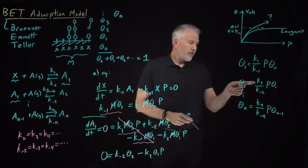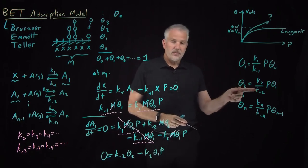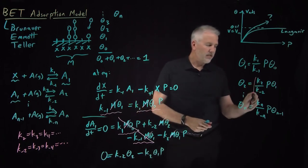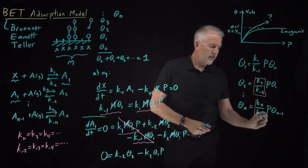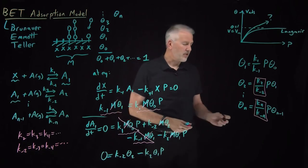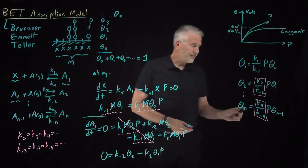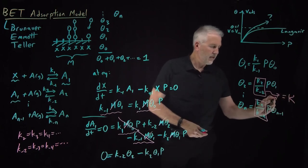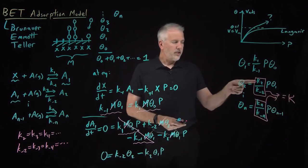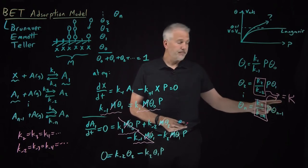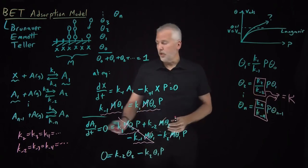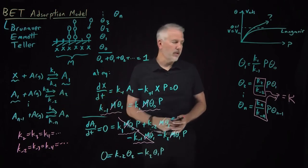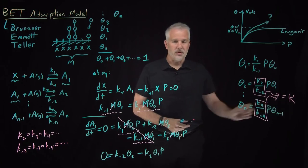So the ratios K2/K minus 2, K3/K minus 3, and Kn/K minus n are all the same number. We'll define that as an equilibrium constant K. So theta 2 equals K times P times theta 1, and theta N equals K times P times theta N minus 1. The first layer ratio K1/K minus 1 is different from K; it differs by a new constant C, so theta 1 equals C times K times P times theta 0.